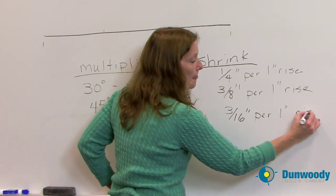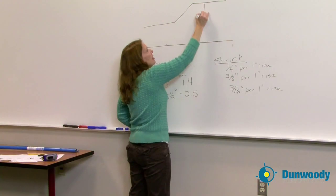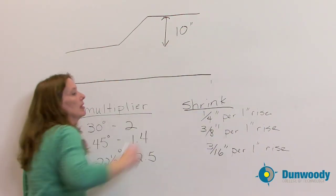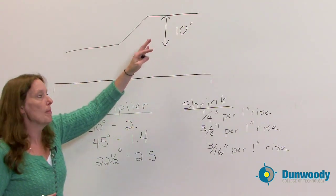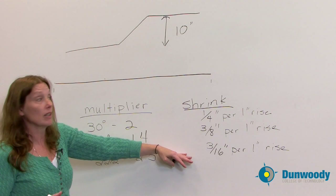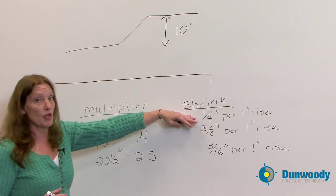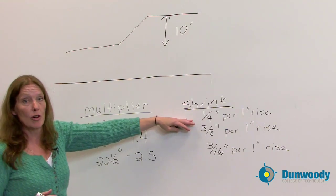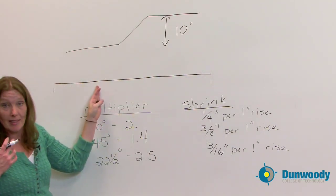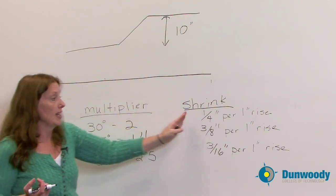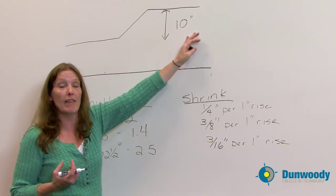So what does that mean? If I have an offset going over a 10-inch obstruction, the overall length is going to shrink up depending upon the degree bend I'm using. In the case of a 10-inch obstruction with a 30-degree bend — quarter inch per inch of rise — I would lose 10 times one-quarter inch, or 2.5 inches of length. So if my obstruction starts at 20 inches, I have to add an additional 2.5 inches to my measurement in order for the bend to come out to the correct value.